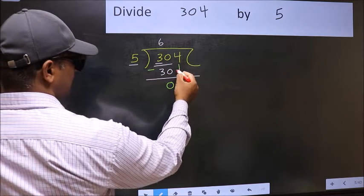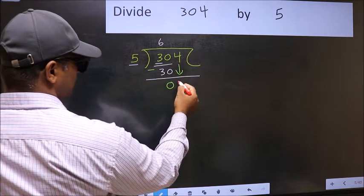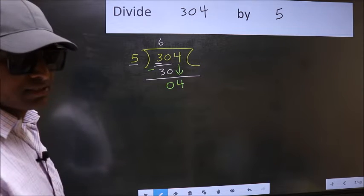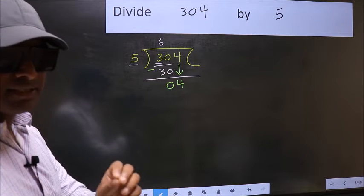After this, bring down the beside number. So, 4 down. After this step, the mistake happens. And the mistake is this.